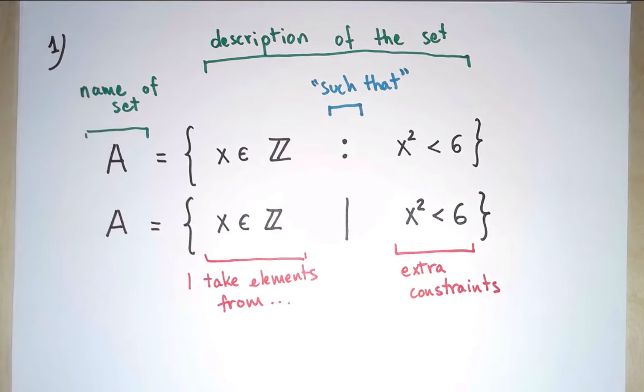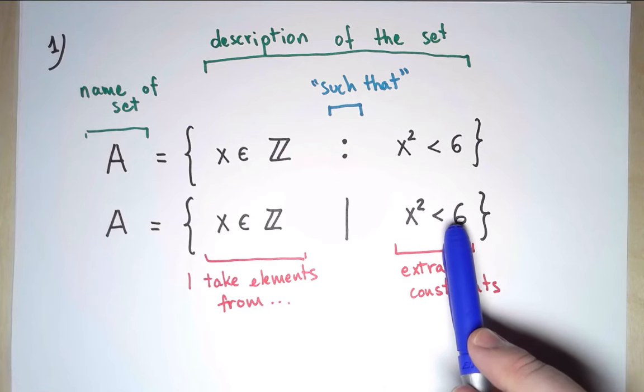So how do I read this sentence? This says that A is the set of integer numbers x, such that x² is less than 6.